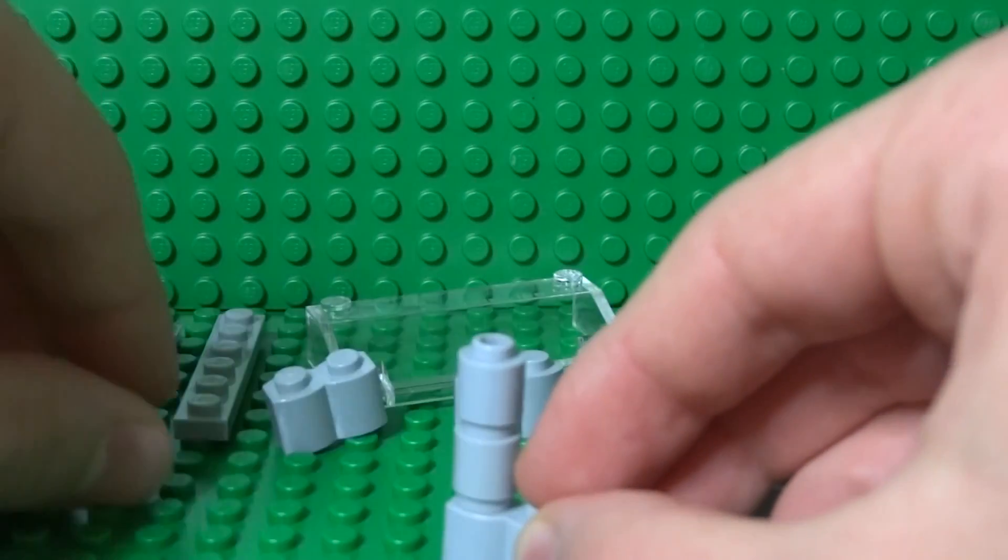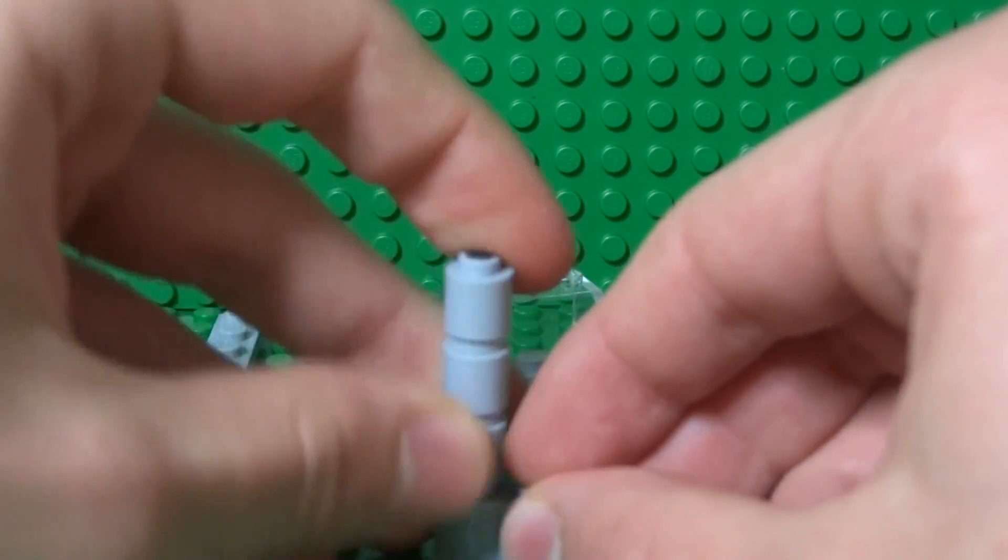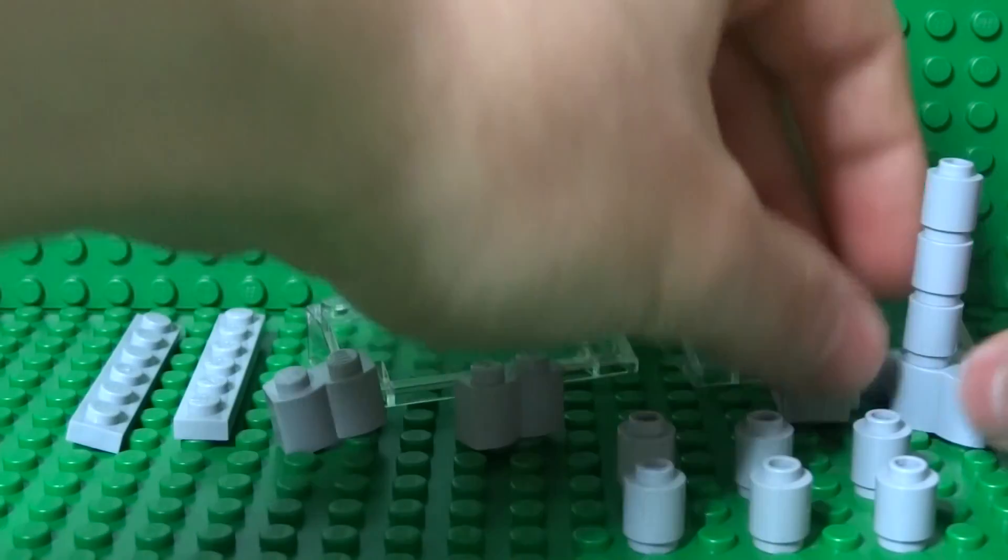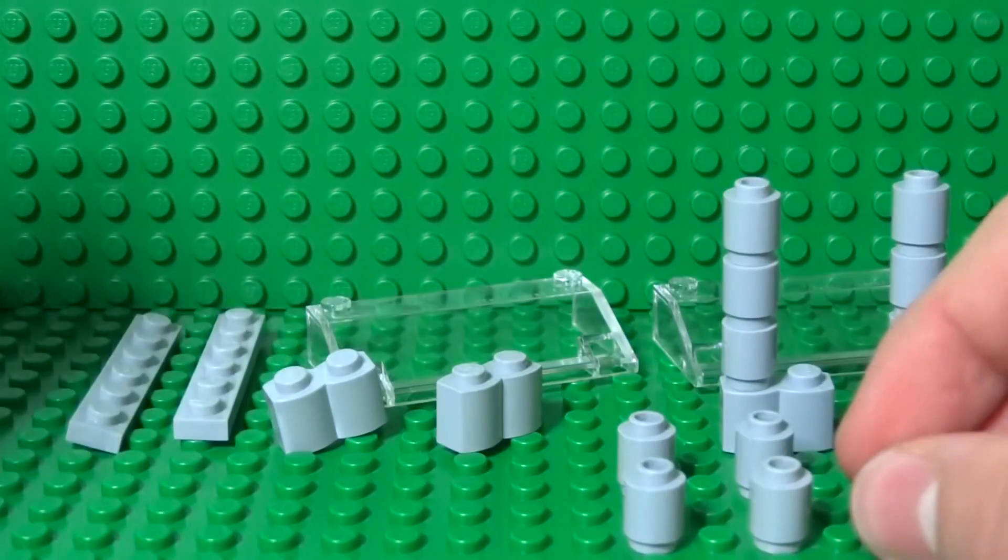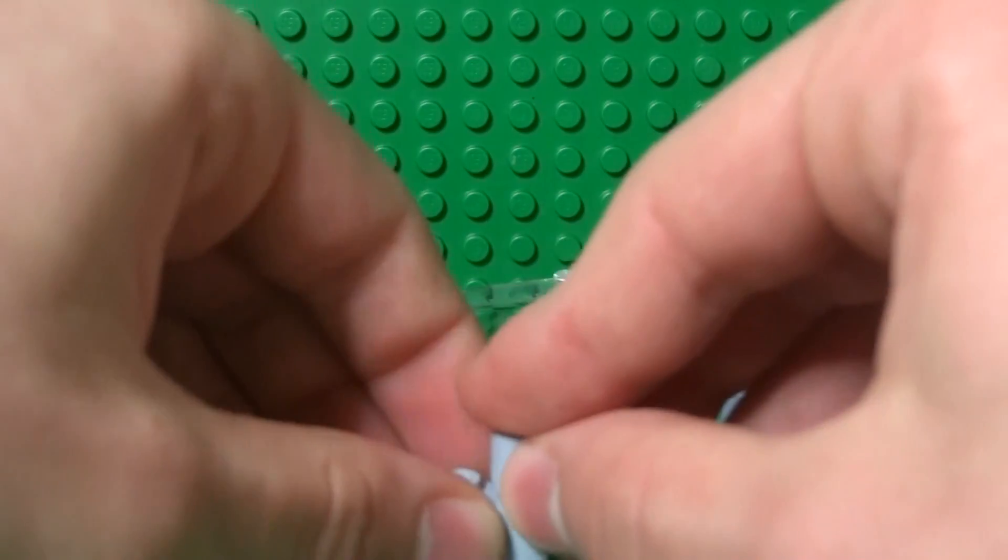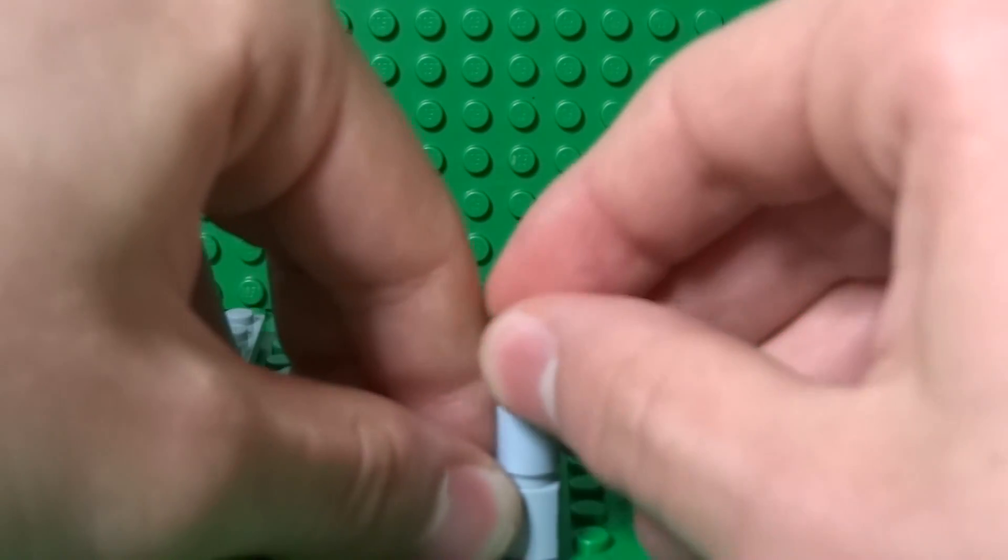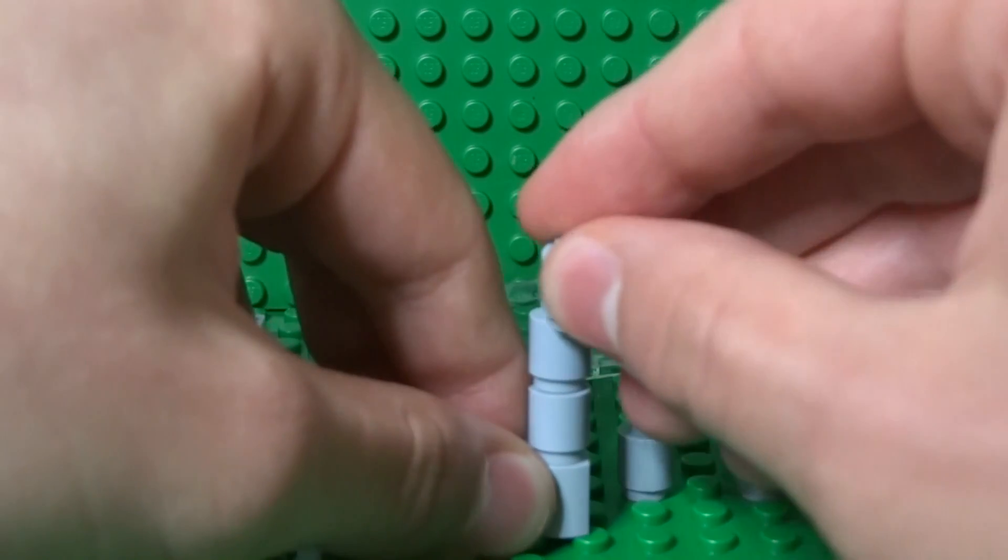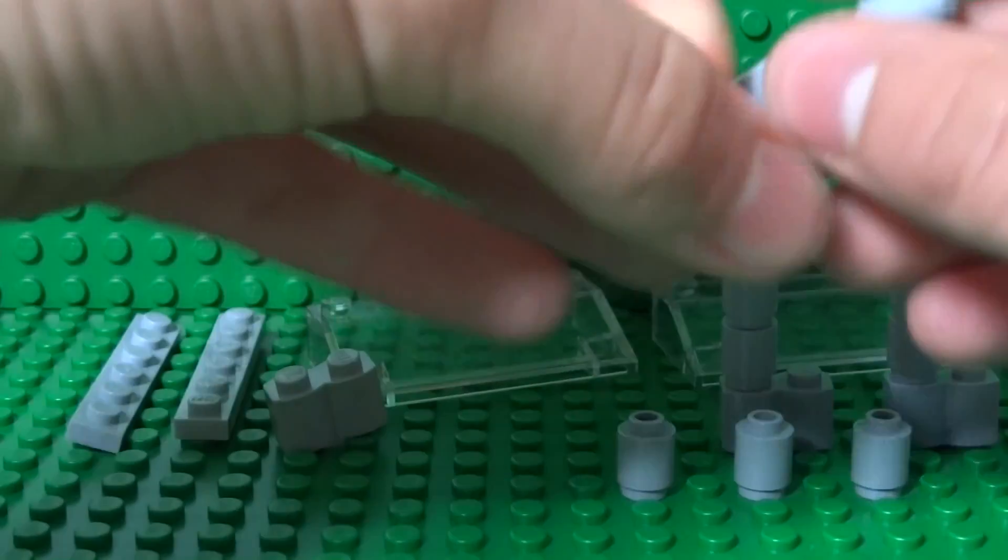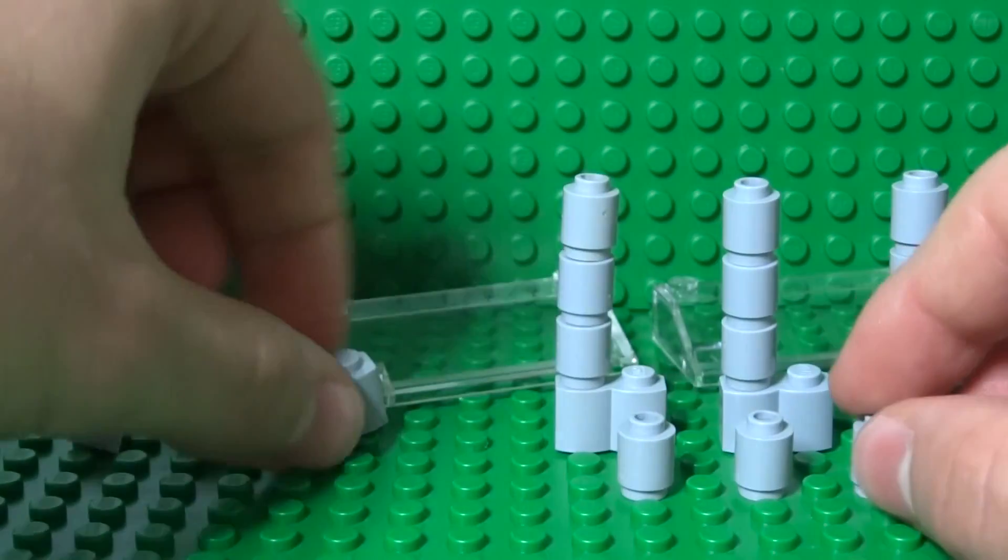And these form the supports of the roof of the salad bar. You might want to just clip them down for now so they don't fall over. And the last one.